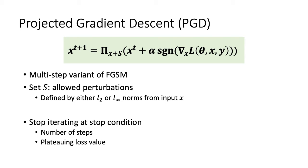PGD is basically a multi-step variant of FGSM, except we constrain how much it can perturb. We choose a set S as allowed perturbations, and if the FGSM run exits this set, we project it back onto the set. In this paper, perturbations are bounded by either L2 or L-infinity norms. PGD runs FGSM on an input and uses this output as the next step's input. The algorithm runs until a certain condition is met, like the number of steps or a plateauing loss value.